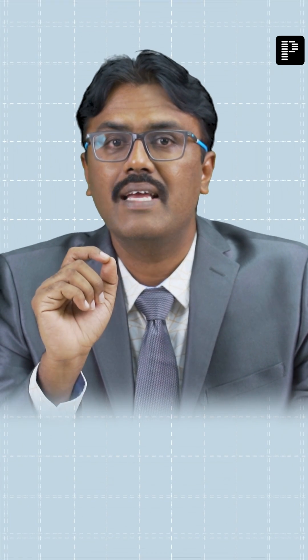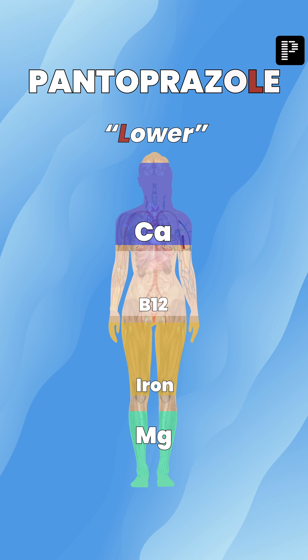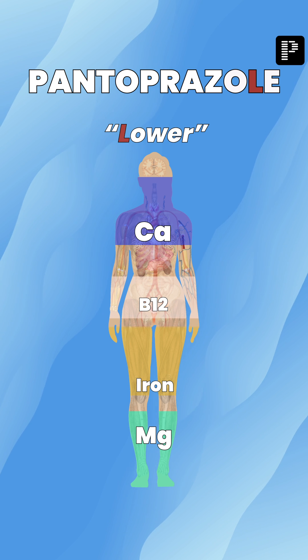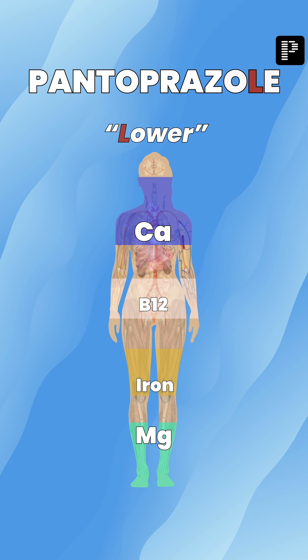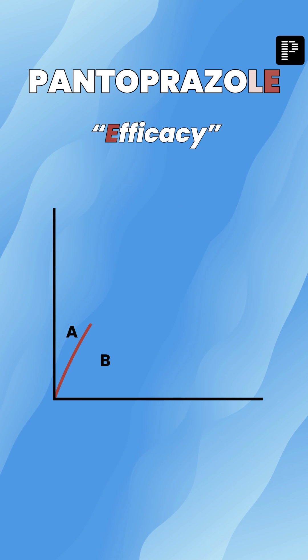The next letter is L — the drug lowers calcium, leading to fractures. It can lower B12, it can lower iron absorption, and also it can lower magnesium.